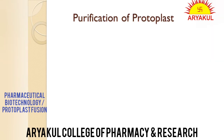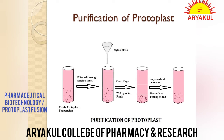Ab important hai purification. Ek baar protoplast mil gaya but that is in the crude form. To ab is protoplast ko purify kaise karenge? Generally the mixture of protoplast and enzyme is filtered through a nylon mesh — this filtration will remove the cell wall debris. The supernatant contains the debris which we remove by pipette. Now this protoplast at the base is ready for culture.